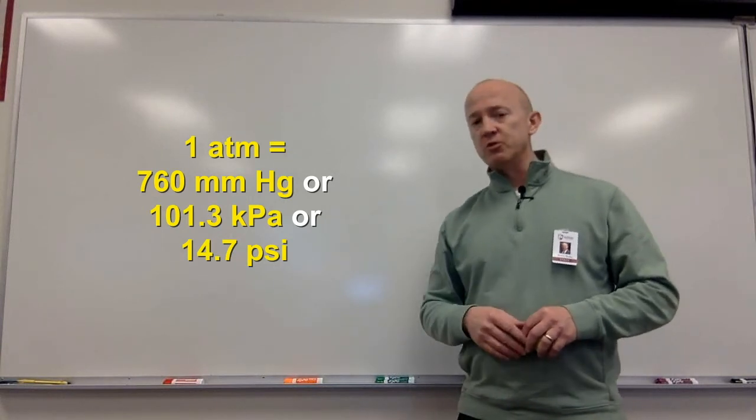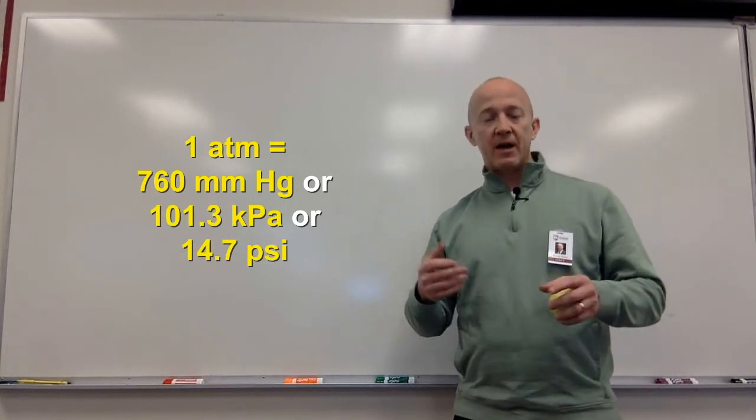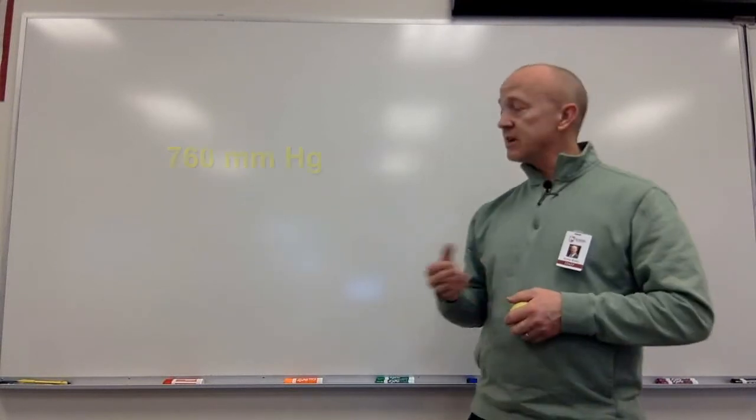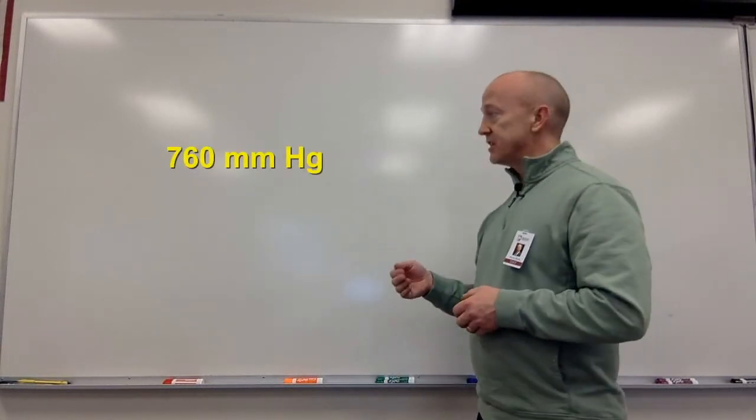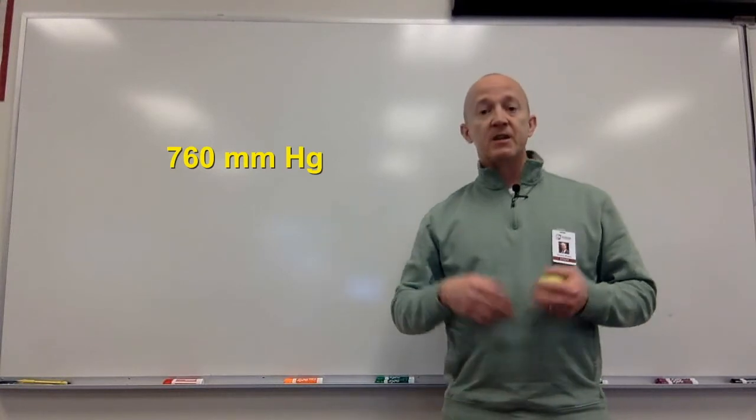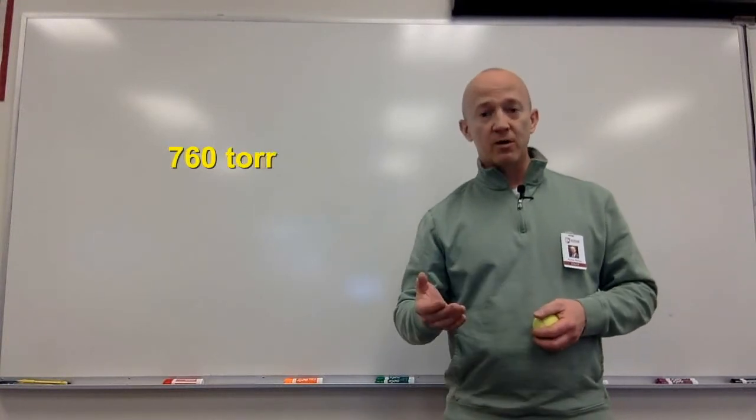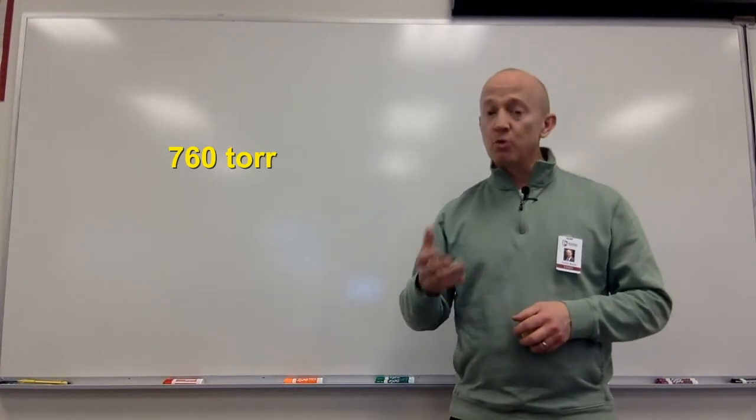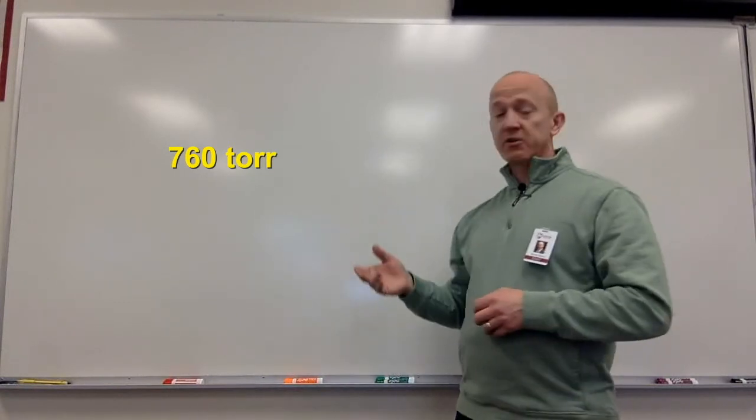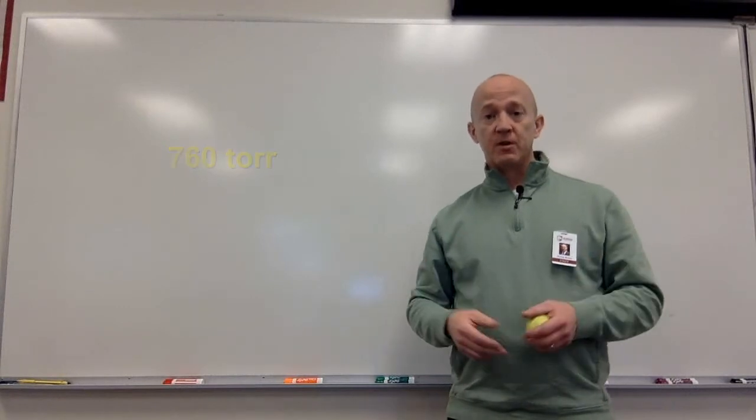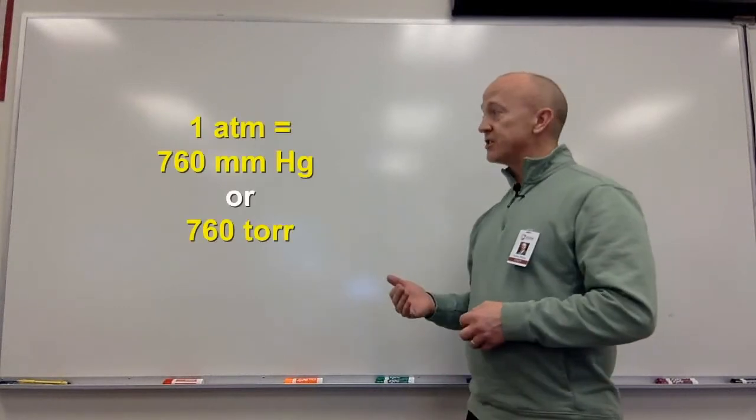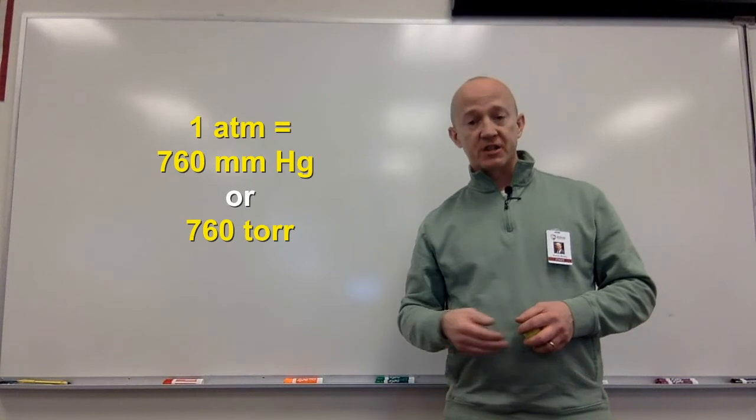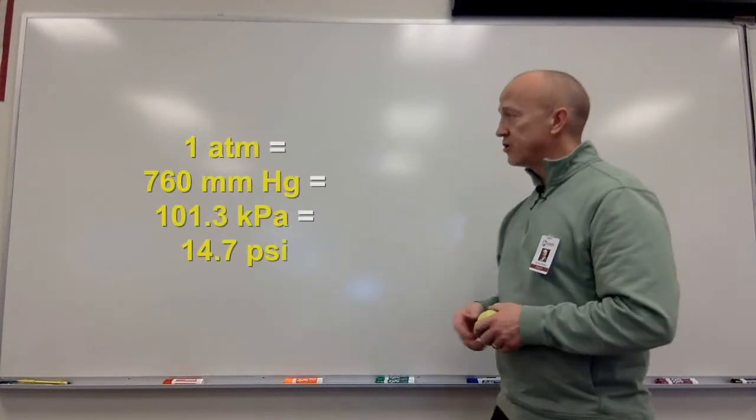Something else to note. Sometimes, instead of seeing 760 millimeters of mercury, you'll see 760 tor. That's right. The unit was named in honor of Evangelista Torricelli. So, a millimeter of mercury and a tor are interchangeable. One atmosphere equals 760 millimeters of mercury, or 760 tor. So, these are the pressure units we'll be using.